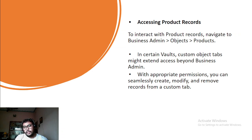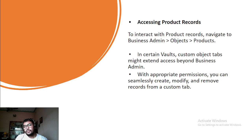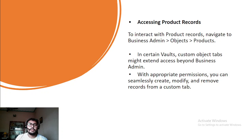The product record can be navigated from the business admin menu, then object, and then product. In certain cases, a custom object tab might extend access beyond business admin, meaning users don't need to switch to the business admin tab — they can get the product object from their home tab beside the home tab, and that can be customized. With the appropriate permissions, users can seamlessly create, modify, and remove records from the custom tab.